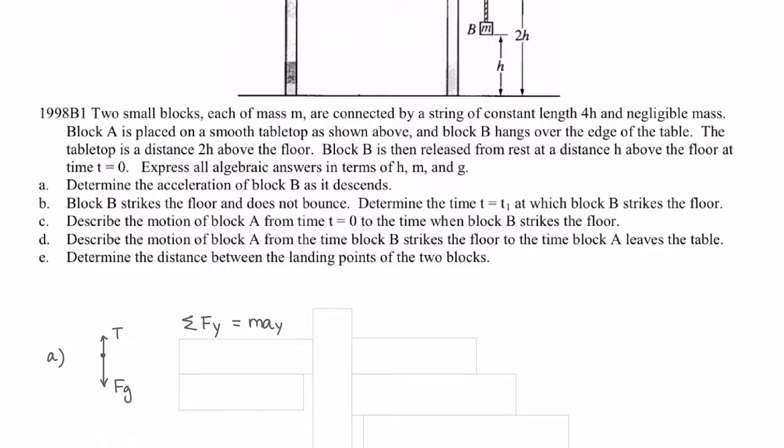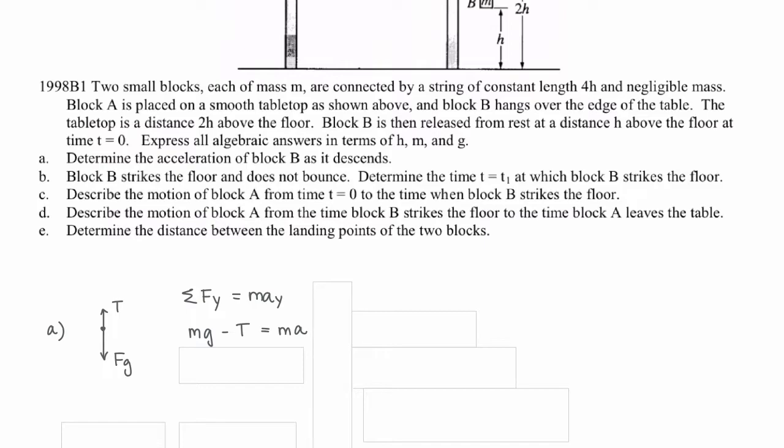The sum of all forces in the y direction equals mass times acceleration. Because the block is moving downward, let's choose that direction as positive. So mg is our positive force and tension is negative. Rearranging, tension equals mg minus ma.